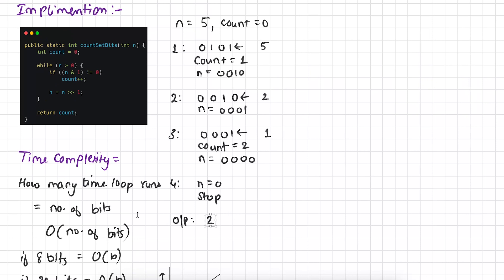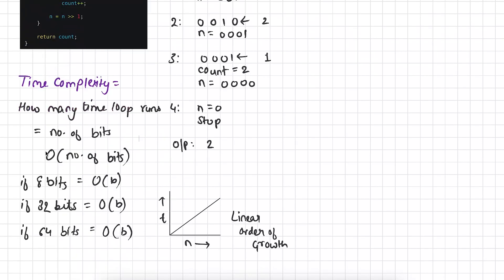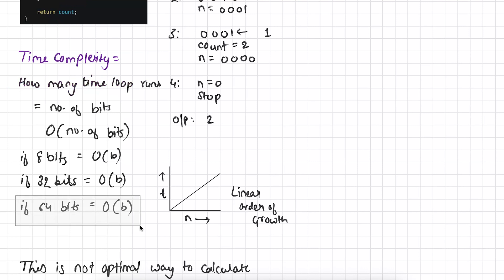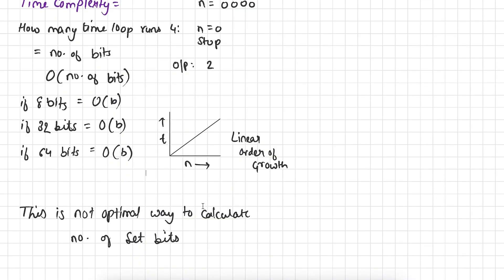Talking about the time complexity of this function: this loop runs for the number of bits present in the number. For 4-bit integers the loop runs 4 times, so the overall time complexity is O(number of bits). For 8-bit numbers it's O(8), for 32-bit numbers O(32), and for 64-bit numbers O(64). This is a kind of linear order of growth and is not the optimal way to count set bits — we have other techniques that can do it in less time.